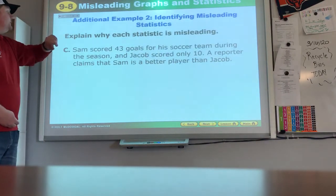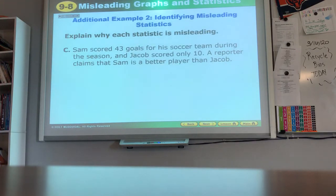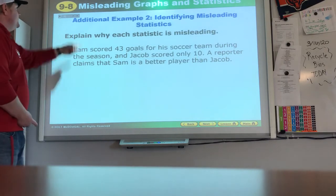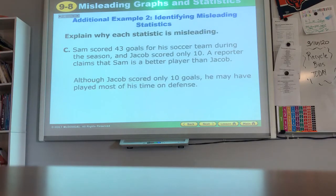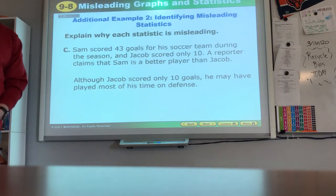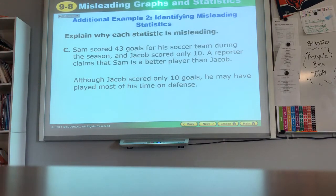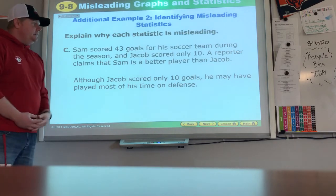Why is this statistic misleading? Sean Sam scored 43 goals for his soccer team during the season and Jacob only scored 10. A reporter claims that Sam is a better player than Jacob. Well, sports-minded people, let's see if you agree. Although Jacob scored only 10 goals, he may have played most of his time on defense. If he's a defender, he's not going to be up near the goal, so he may have a very important job or role but doesn't get the opportunity to score many goals.